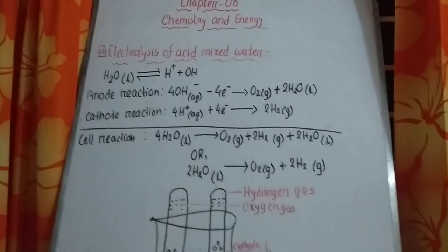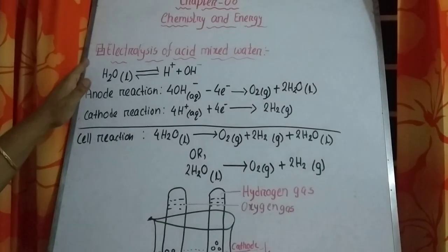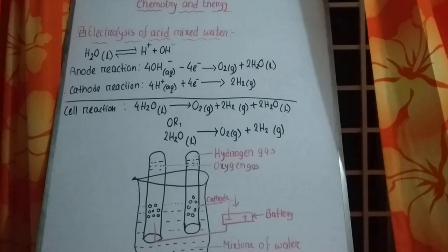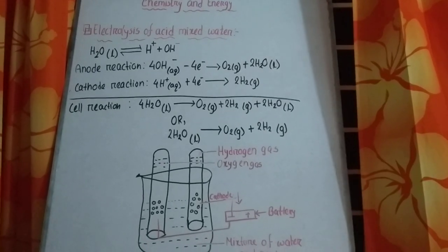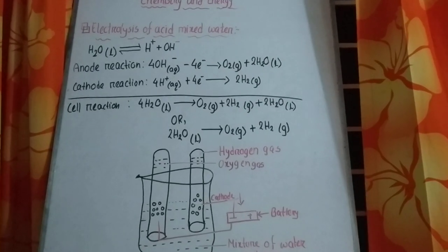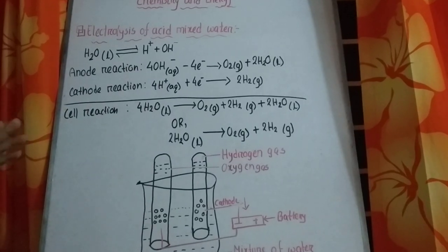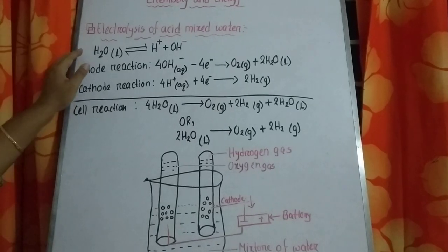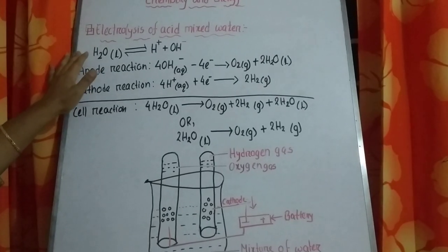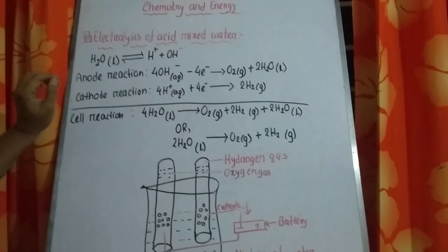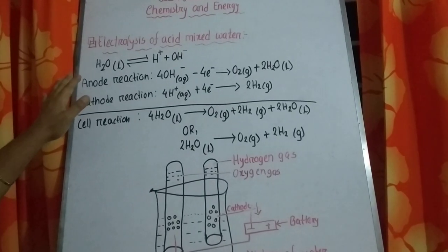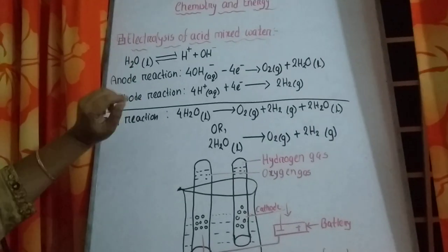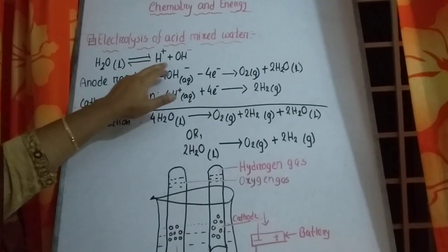Now come to the electrolysis of acid-mixed water. You may ask: why acid-mixed water and not pure water? Because pure water cannot be ionized. For ionization, we have to mix a small amount of sulfuric acid or another acid with water. After mixing sulfuric acid, water can be partially ionized and produces hydrogen ion and hydroxyl ion.